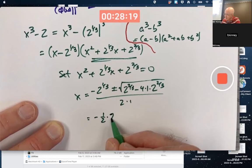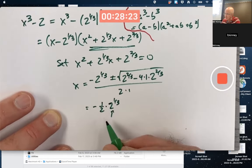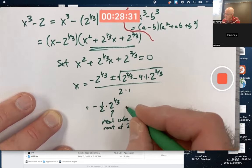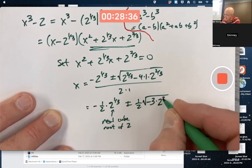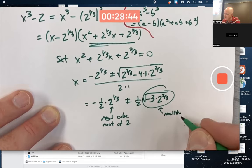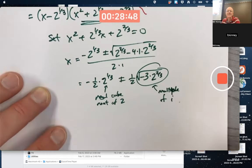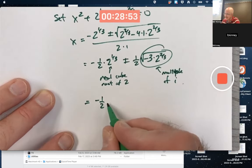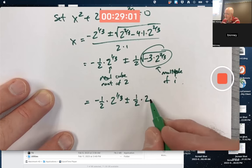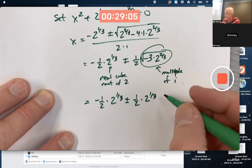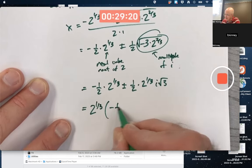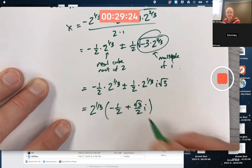Negative 1/2 times 2 to the 1/3, where this represents the real cube root of 2, plus or minus 1/2 square root of negative 3 times 2 to the 2/3. That's going to be a multiple of i because it's square root of a negative number. Square root of 2 to the 2/3 is 2 to the 1/3. Square root of negative 3 could be thought of as i times the square root of positive 3. This is probably more commonly written with the 2 to the 1/3 factored out.